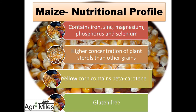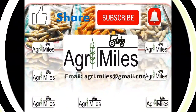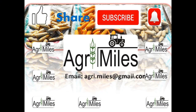Maize grain has another feature: it has a relatively higher concentration of plant sterols compared to other grains. Yellow or orange maize or corn has beta-carotene content, which varies in different varieties. Beta-carotene is the precursor of vitamin A, or pro-vitamin A, which transforms into vitamin A in the body. Importantly, maize is also gluten-free. That was all about the major cereals. Please share your comments. Thank you very much.